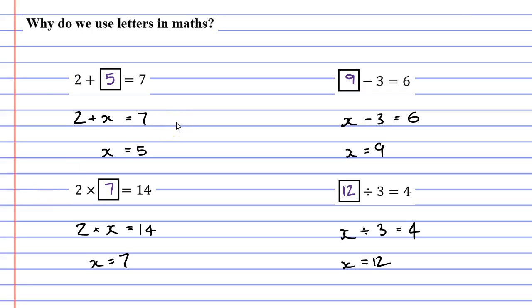Now there's something you might have noticed when I put letters into all of these problems. You will notice that each time our letter, which was x, equaled a different number. It equaled 5, it equaled 9, it equaled 7, and it equaled 12. So x can change all the time. We quite often say that x varies from question to question, which is why when we use letters in maths, quite often we refer to them as a variable.